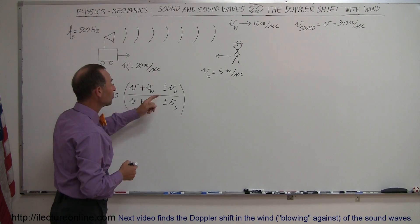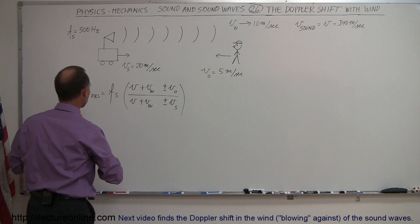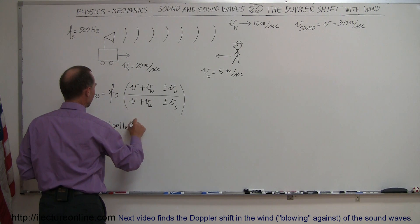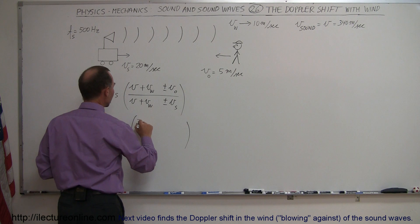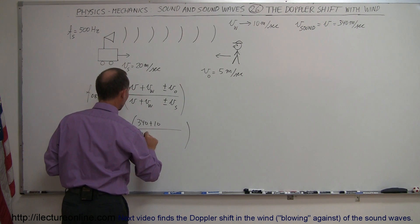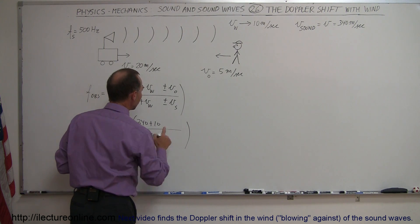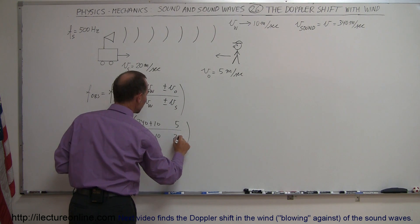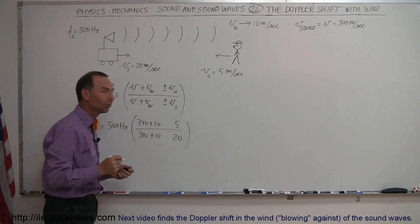All right, and we still have to determine what these are. Let's plug in the numbers and see what that is. So this is equal to 500 hertz times, this would be 340 plus 10, divided by 340 plus 10. Again, velocity of the observer is 5 meters per second, velocity of the source is 20 meters per second, but this is a plus or minus.